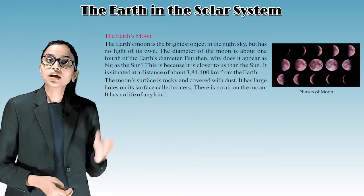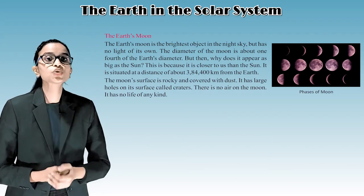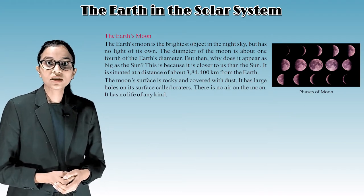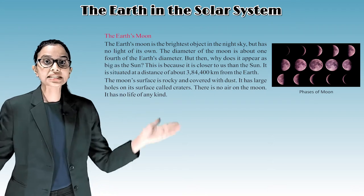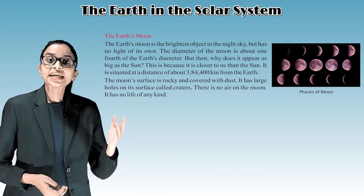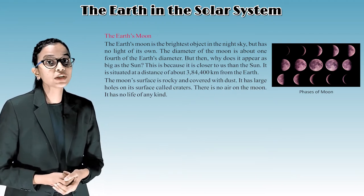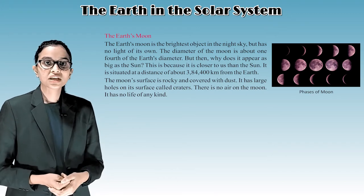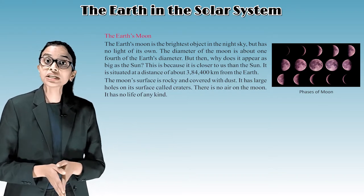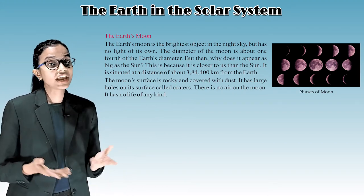The Earth's moon. The Earth's moon is the brightest object in the night sky, but has no light of its own. The diameter of the moon is about one-fourth of the Earth's diameter. But then, why does it appear as big as the sun? This is because it is closer to us than the sun. It is situated at a distance of about 384,400 km from the Earth. The moon's surface is rocky and covered with dust. It has large hollows on its surface called craters. There is no air on the moon. It has no life of any kind.